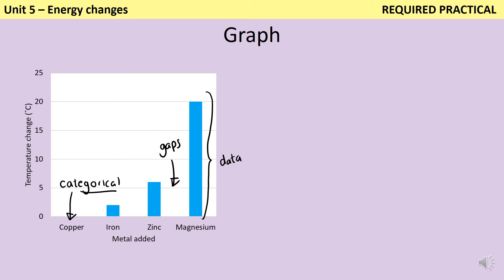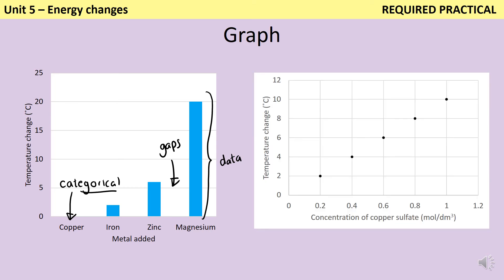Now, not every investigation that you could do for this required practical would require a bar chart. If, for instance, we'd looked at the mass of the metal being added, or here, the concentration for the copper sulfate, these are continuous data, and so therefore, it's more appropriate for us to do a scatter graph. But again, it's important that we use up as much of the graph paper as possible.